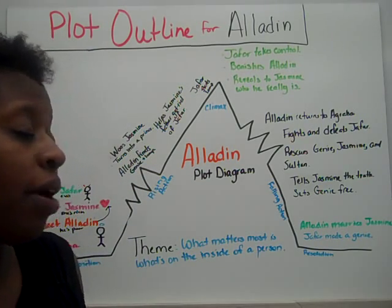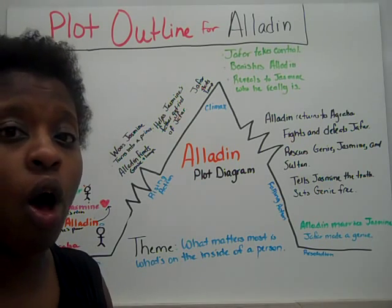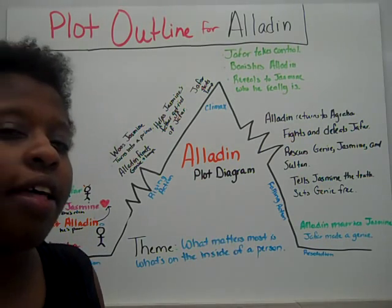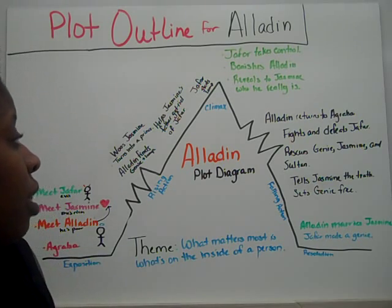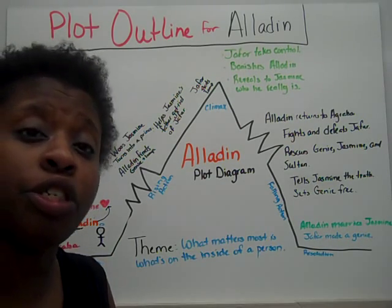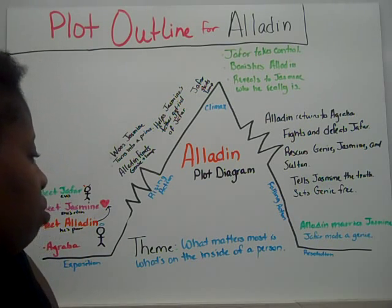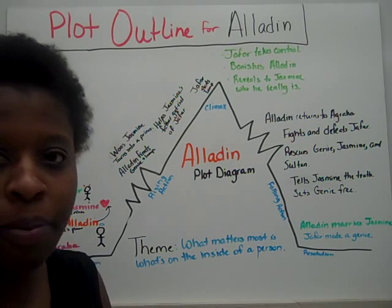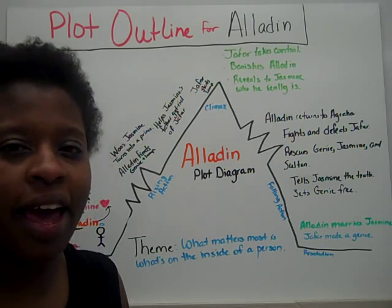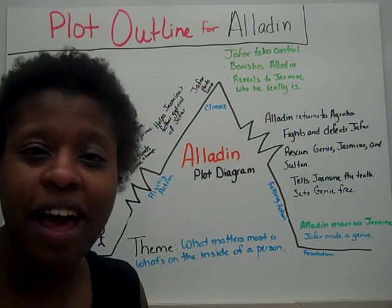Now we have to think about what the theme is. Looking back on the plot, you want to look at the exposition, the climax, and the resolution. Ultimately, the theme of Aladdin is that what matters most is not what's on the outside of a person, but what's on the inside. And that is the plot outline for Aladdin.